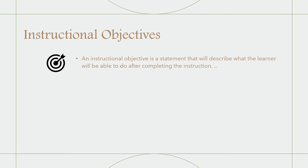One type of objective is the instructional objective. An instructional objective is a statement that describes what the learner will be able to do after completing the instruction — for example, 'the student will be able to identify a noun' or 'the student will be able to identify an adjective.' Instructional objectives are specific, measurable, short-term, and observable by the teacher through student behavior or vocabulary. They indicate the desired knowledge and skills we hope students gain from the lesson.